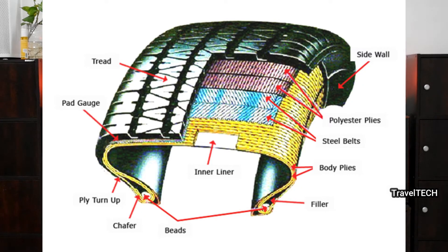Now let's jump into the radial tire directly and look at the parts of a tire. On the screen you can see the cross-section of a radial tire. Some of the important tire parts are: tread, pad gauge, ply, inner liner, sidewall, and more.